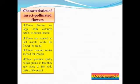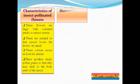Nectar is a sweet fluid that insects consume as food. In order to do that, they carry out pollination. These flowers produce sticky pollen grains. Whenever insects visit to take nectar, the sticky pollen grains stick to their body parts. When they visit another flower, they may drop or rub off the pollen, and pollination takes place.